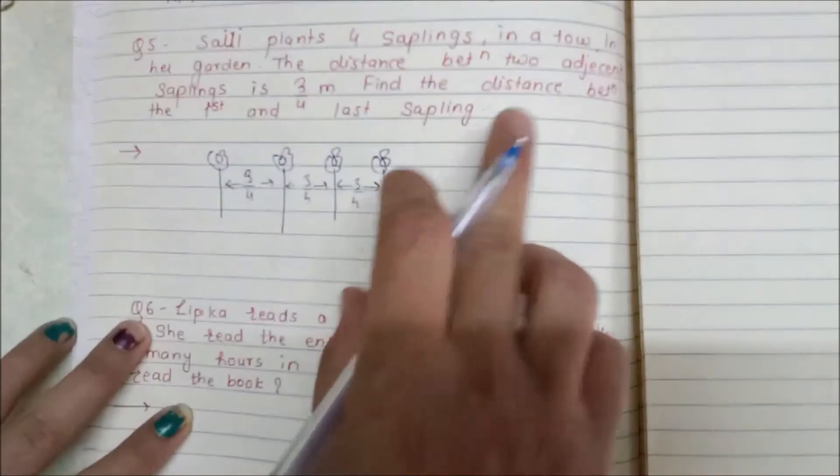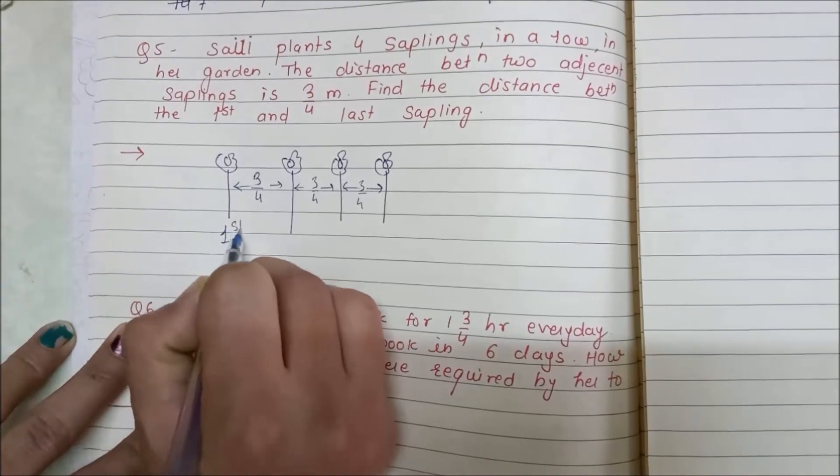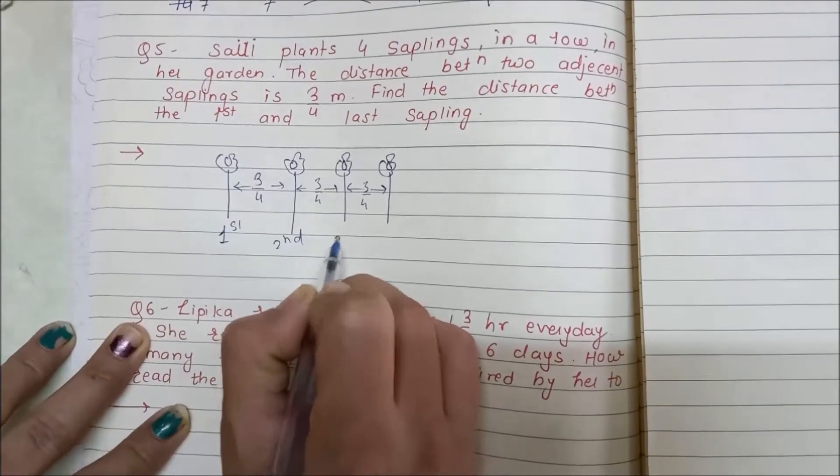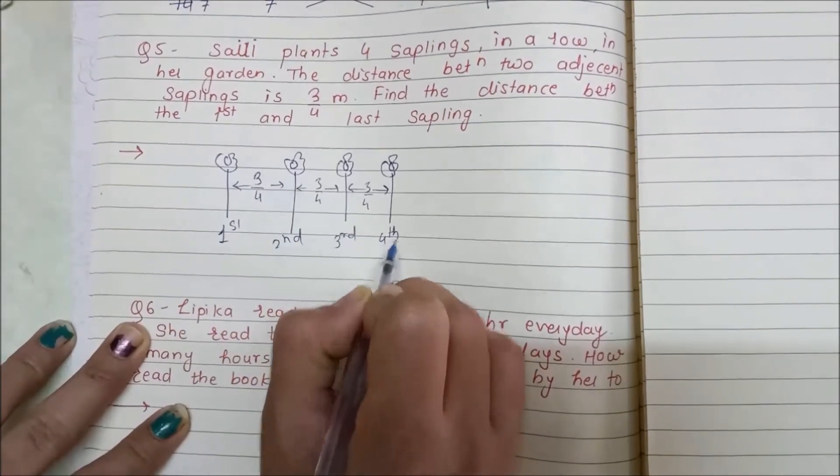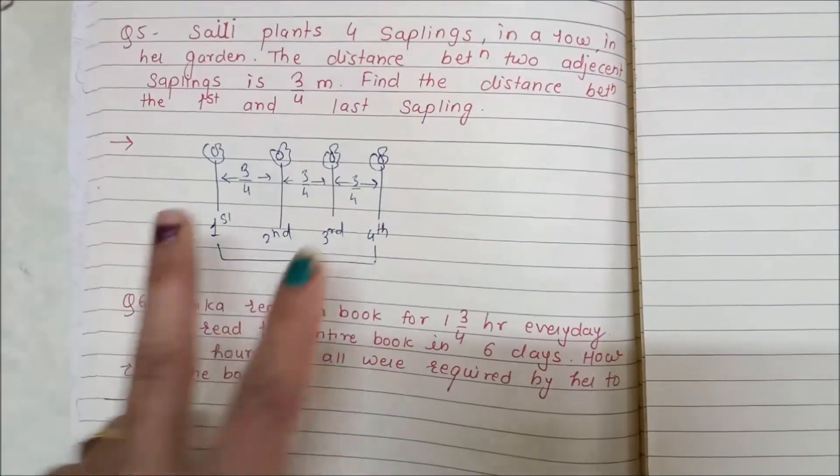So what you have to find: find the distance between the first and last saplings. This is the first sapling, second, third, and fourth. You have to find the distance between first and last saplings.